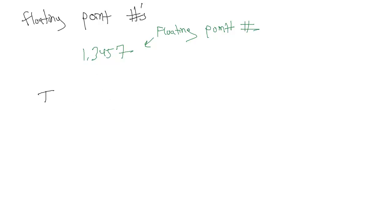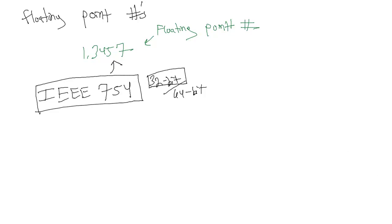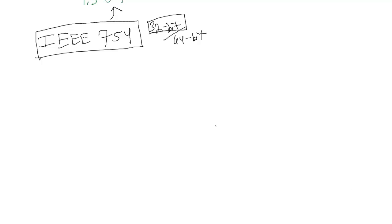There's a standard called IEEE 754 which tells us how we can define a floating point number. There are two versions: the 32-bit and the 64-bit version. We're going to talk about the 32-bit because it's still the most common case, and the 64-bit is just an extension of the 32-bit case.